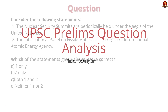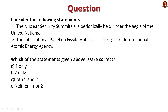Look at this prelims question. The nuclear security summits are periodically held under the aegis of the United Nations. The International Panel on Fissile Materials is an organ of the International Atomic Energy Agency. Which of the statements above are correct? Both statements are incorrect. Now let us see why they are incorrect.